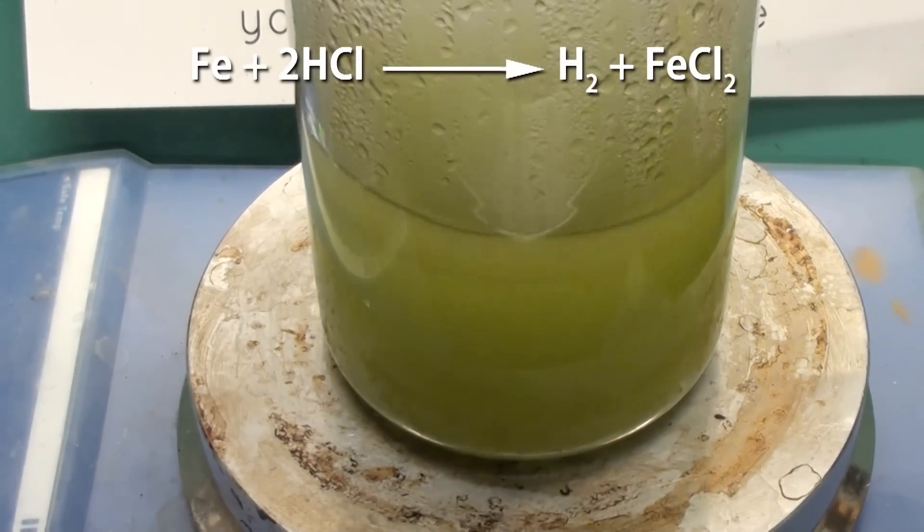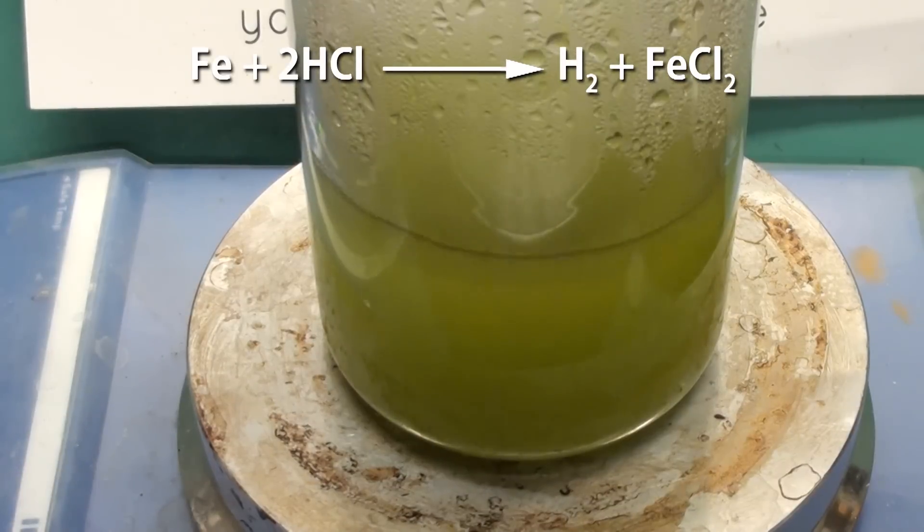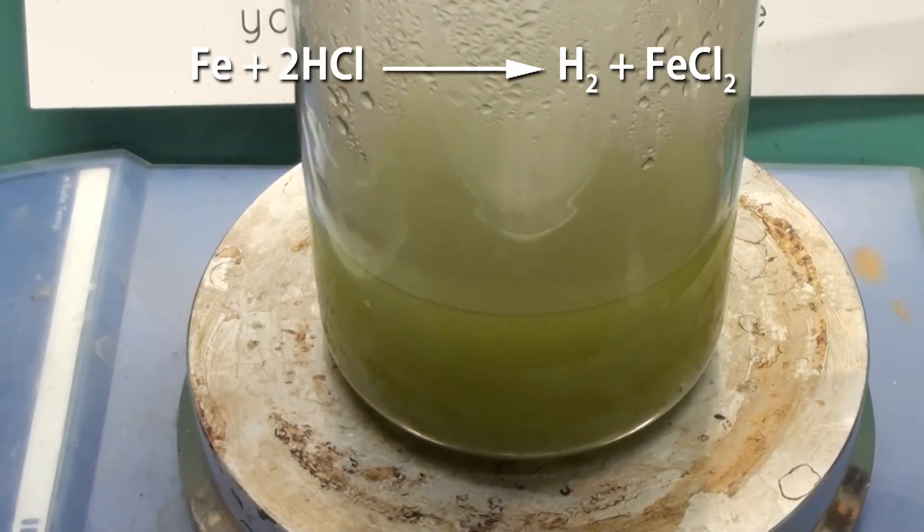What's happening at this point is the iron is reacting with the acid to produce hydrogen gas and green iron chloride, also known as ferrous chloride.